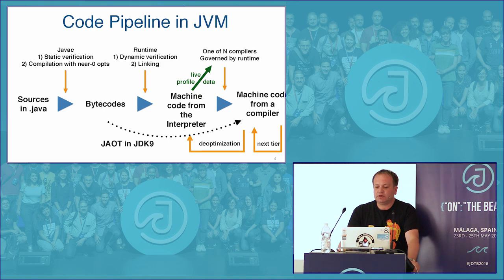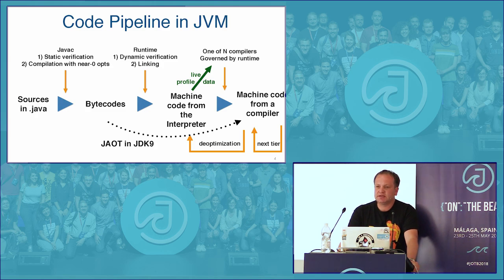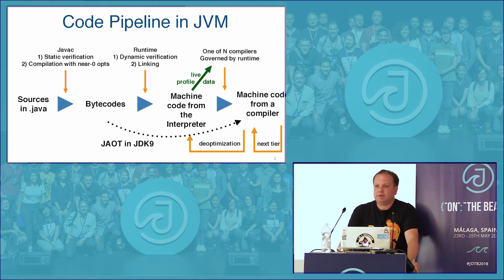The overall code flow inside the JVM has not changed for the last 17 or 18 years, since just-in-time compilers were introduced. You write code originally in Java — that's the most popular source of bytecode. You pass it to the javac compiler. The javac compiler does syntax verification, some static verification, and also some amount of optimizations, but very limited — nearly zero.